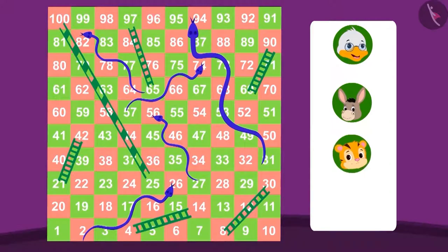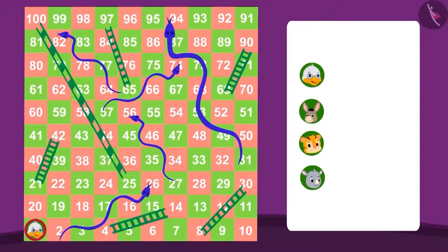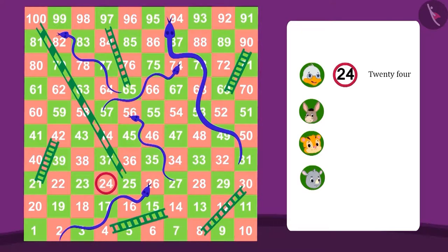Badbole Badak Uncle is on box 24, which is 24 steps ahead of the starting box. Let's see who is on which number in this game.